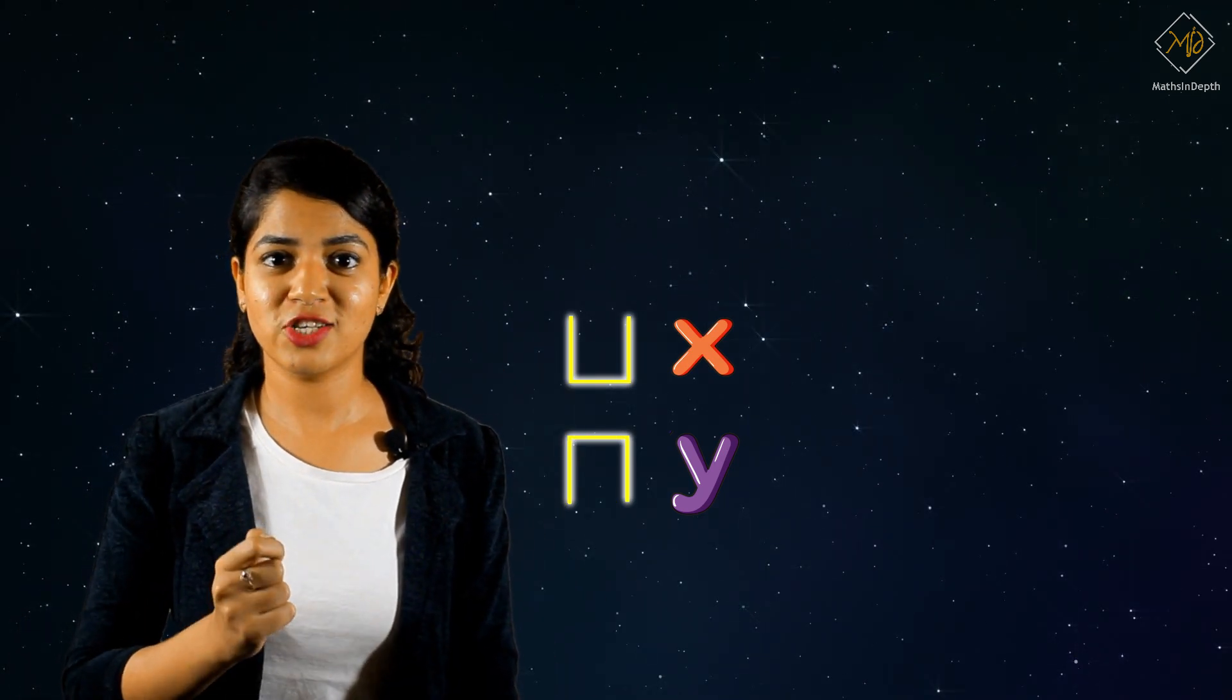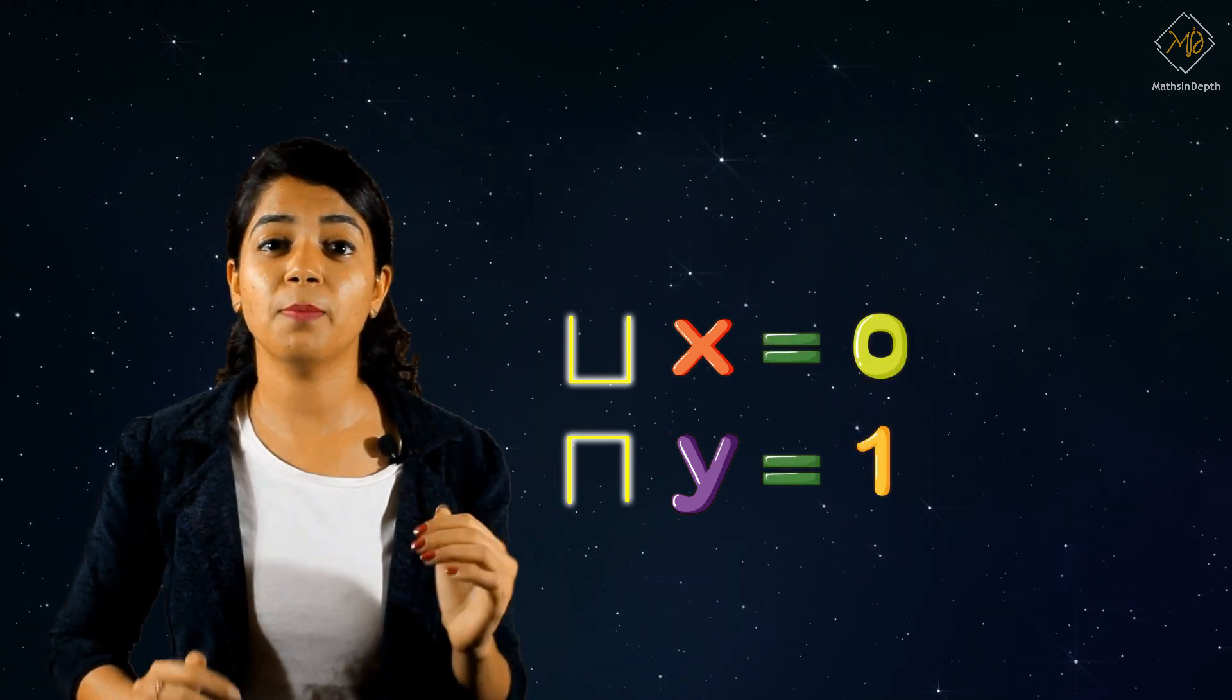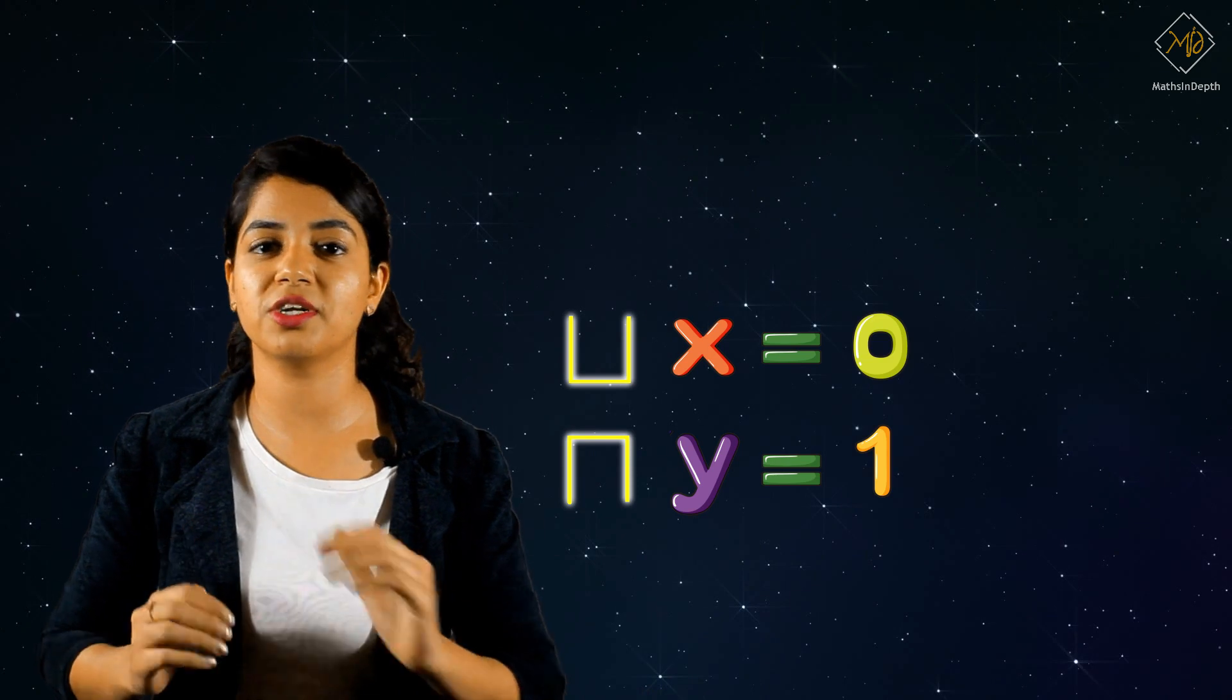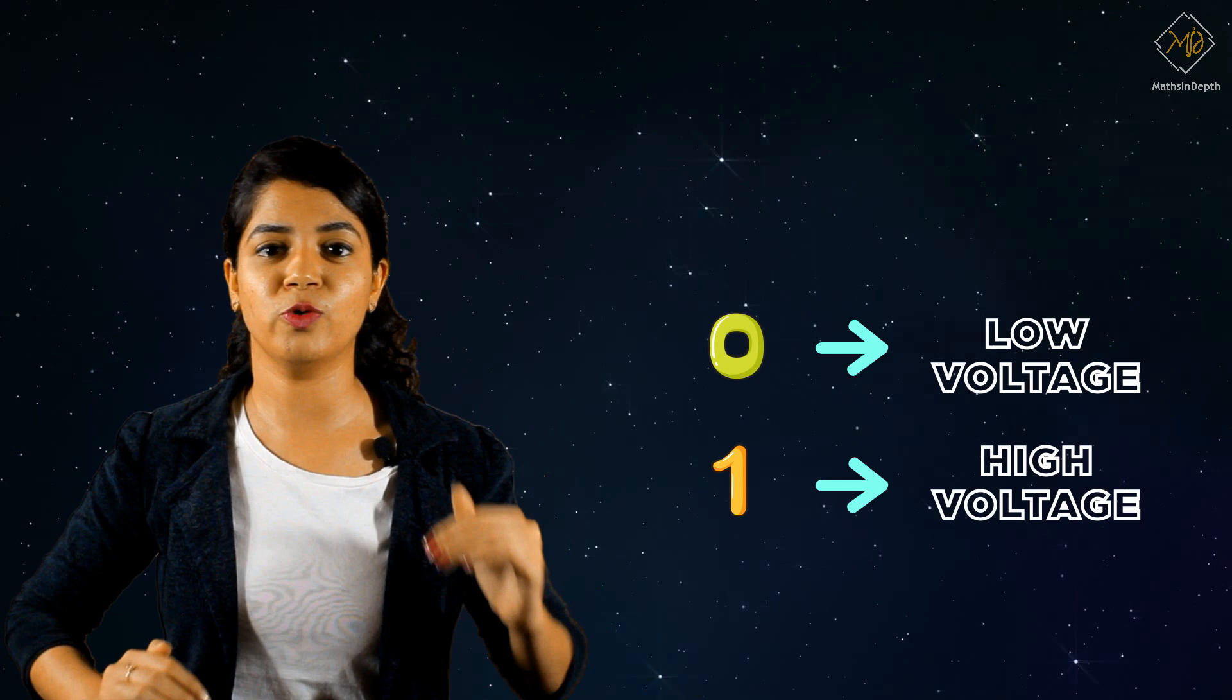Computer scientists suggested that X equals zero and Y equals one are the best choices to represent these voltage levels. That means zero is low voltage and one means high voltage.